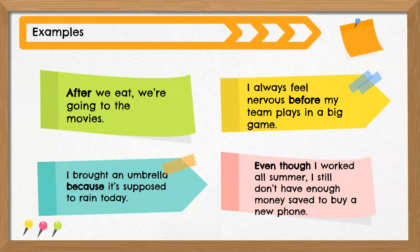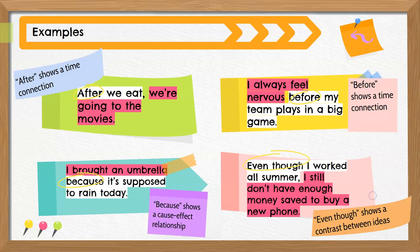Did you spot the AWUBAS words in all four sentences? It looks like there's a lot going on in each sentence, but when you break down the pattern, it's pretty easy. Look at the sentence on the green sticky note. There are two clauses or ideas: we eat and we're going to the movies. These two actions are connected by time. When are we going to the movies? After we eat. After is our subordinating conjunction or AWUBAS word, and that creates the dependent clause. After we eat doesn't express a complete thought — it's dependent on the other clause to make meaning.